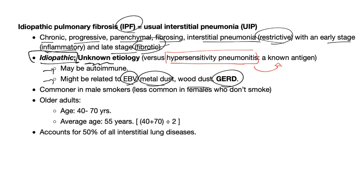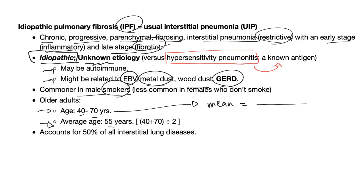Idiopathic pulmonary fibrosis is more common in males who smoke. The typical patient presents between 40 to 70 years of age, and the average age is 55. That's 40 plus 70 divided by 2, which equals 55 years.